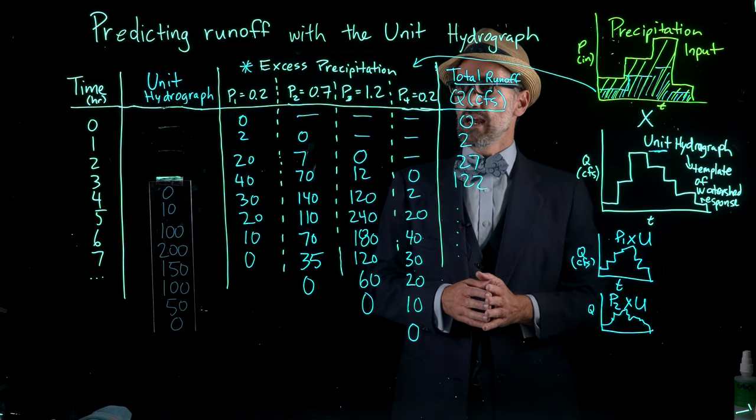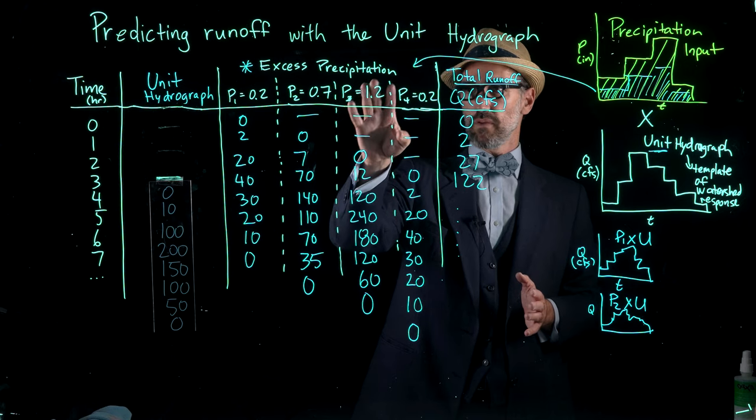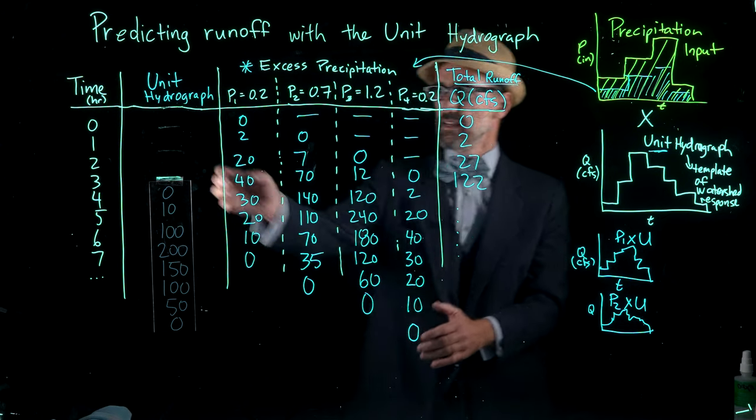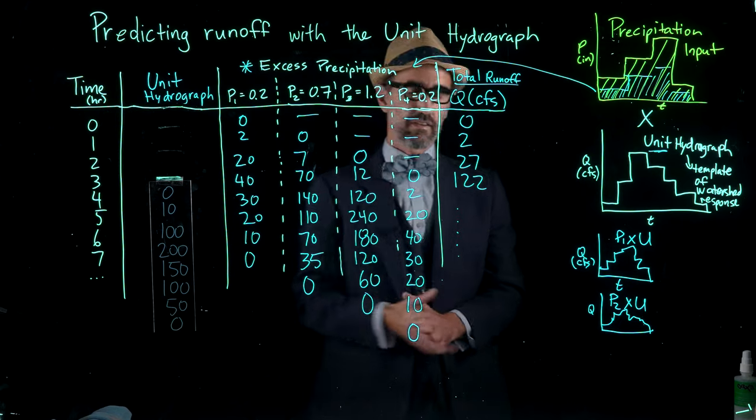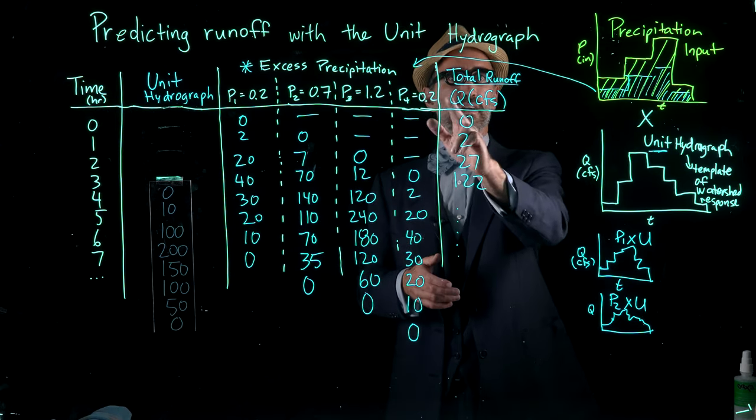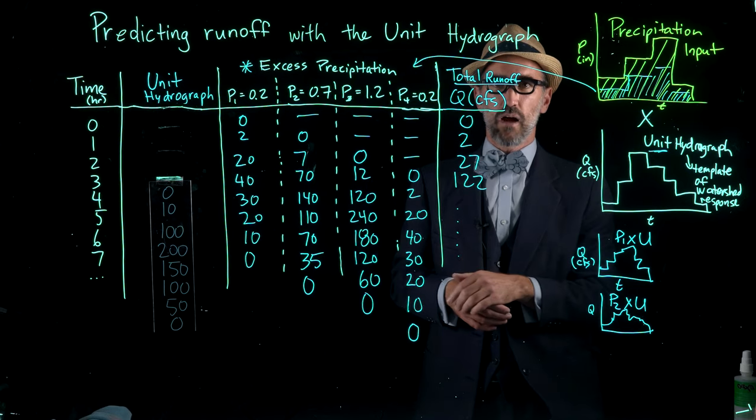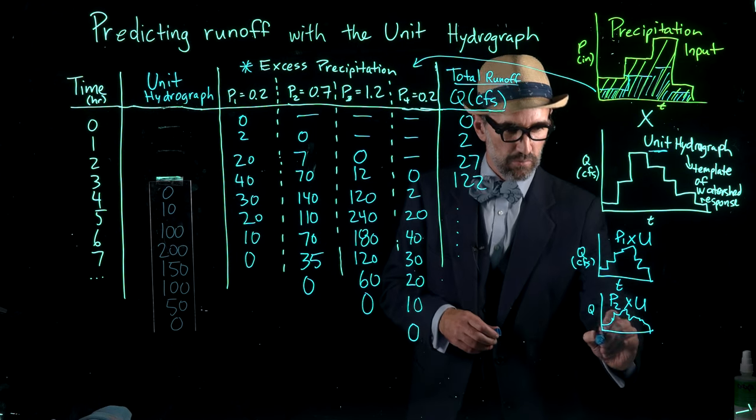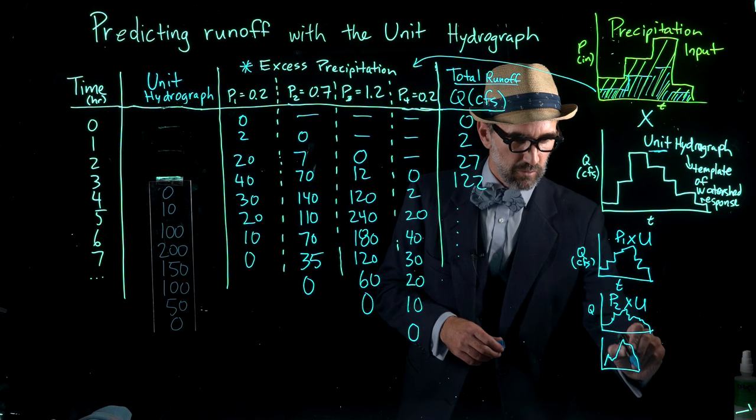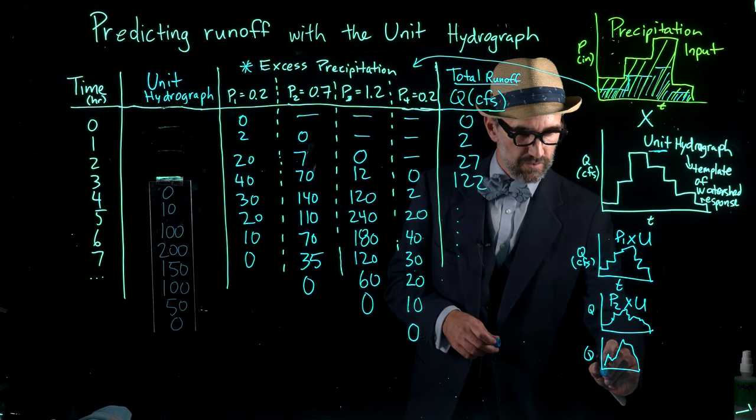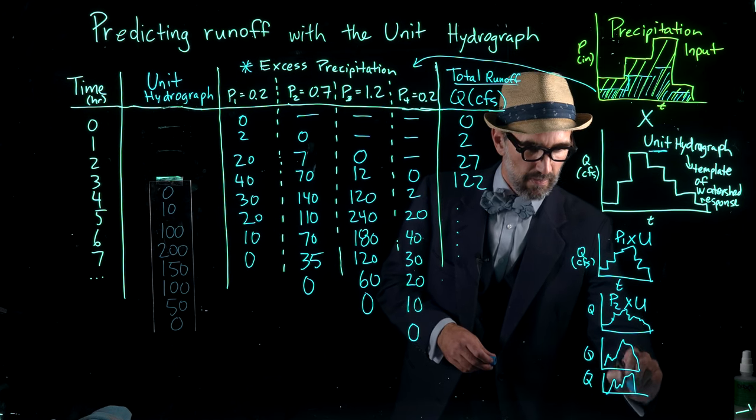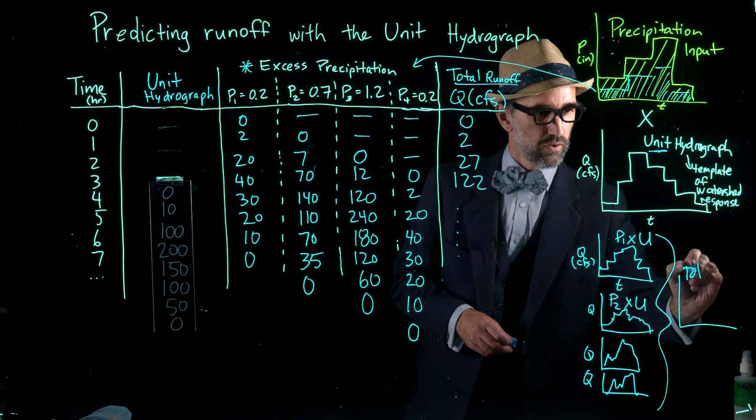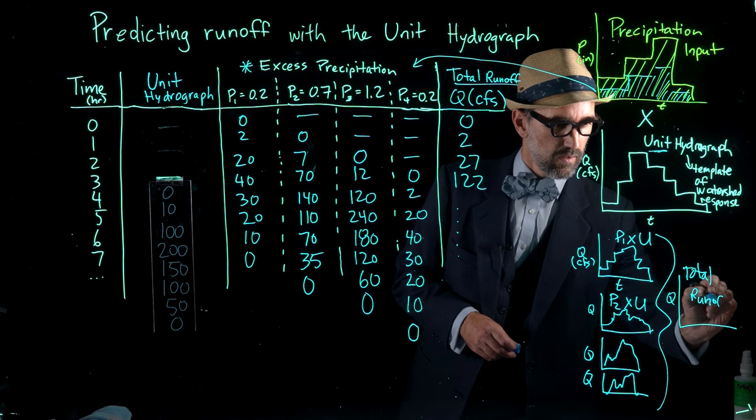Now I have solved for the hydrograph response in p3 and p4 columns. You can see that each of these columns is offset as I've moved down and offset the unit hydrograph template. Then I've just summed across for our total runoff of q in cubic feet per second. So here we have 0, 2, 27, 1, 22. Conceptually, I've also made two more of these graphs for time step 3 and time step 4, and then summed these to have our total runoff through time.